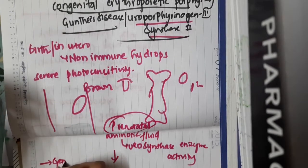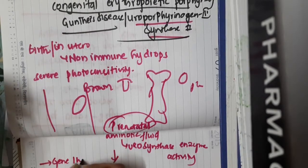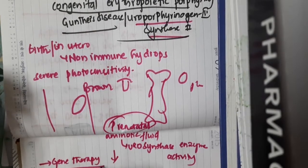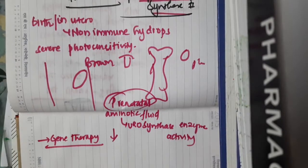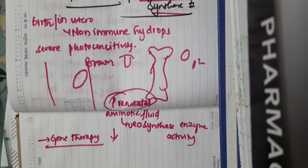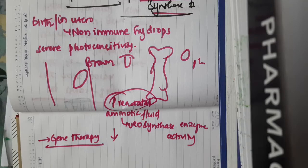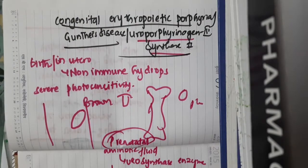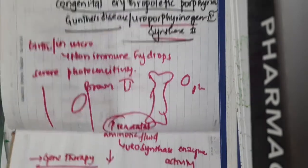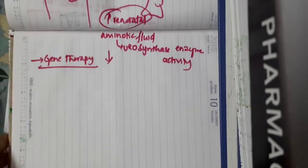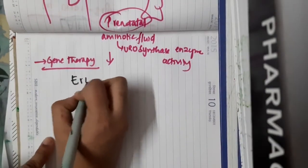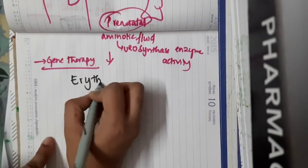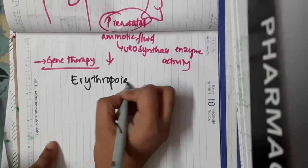Gene therapy is available for this uroporphyrinogen-3 synthase defect, or congenital erythropoietic porphyria. We have one more erythropoietic porphyria we should not confuse it with, which is simply called erythropoietic protoporphyria.